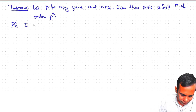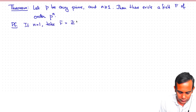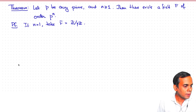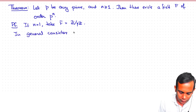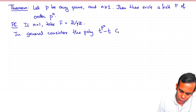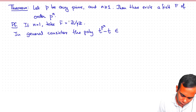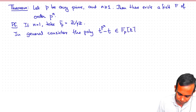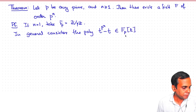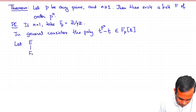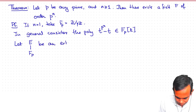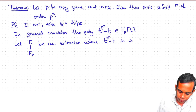To start with, if n = 1, we can just take F = Z mod pZ. In general, the polynomial we consider is t^(p^n) − t. This is a polynomial in Fp[t] — its coefficients are in Z mod pZ. Let E be an extension where t^(p^n) − t is a product of linear factors.